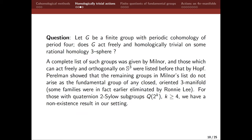Now suppose you have a finite group with periodic cohomology of period four. Does G act freely and homologically trivially on some rational homology three-sphere? We have a complete list of such groups, provided by Milner. Those that can act freely and orthogonally on S3 were listed before by Hopf — they give us the spherical space forms. Now Perelman showed that the remaining groups in Milner's list do not arise as the fundamental group of any closed oriented three-manifold. So for those with quaternionic 2-Sylow subgroups, we have a non-existence result in our study.